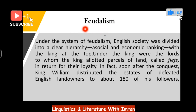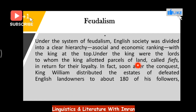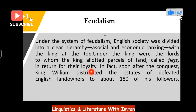Under the system of feudalism, English society was divided into a clear hierarchy — a social and economic ranking with the king at the top. The king would hand over parcels of land to the lords, the noblemen under him. The king allotted these parcels of land, called fiefs, in return for the loyalty of these lords. In fact, soon after the conquest, King William distributed the estates of defeated English landowners to about 180 of his followers.